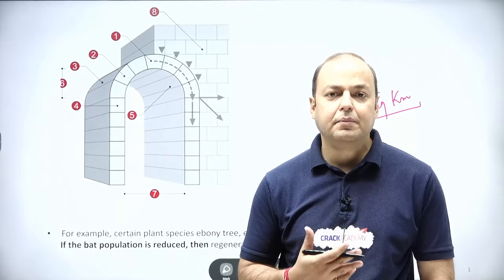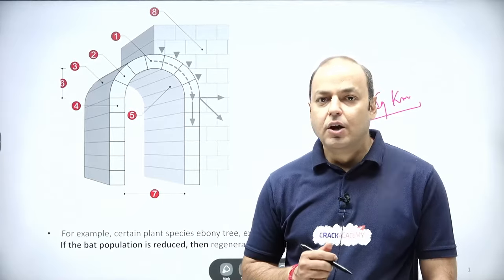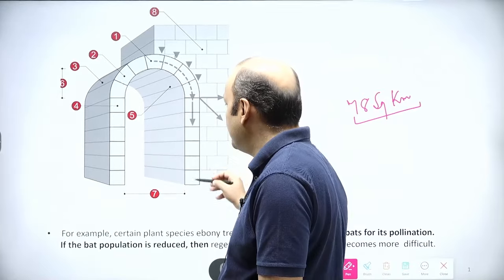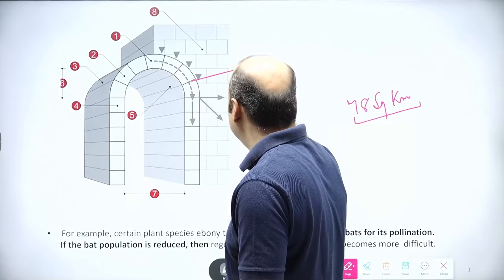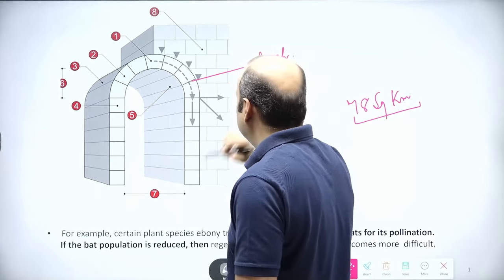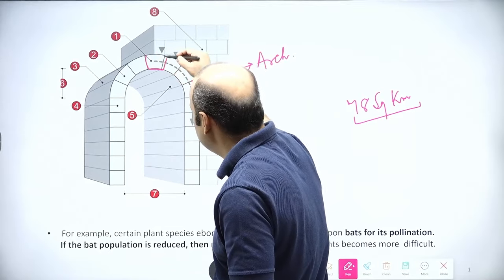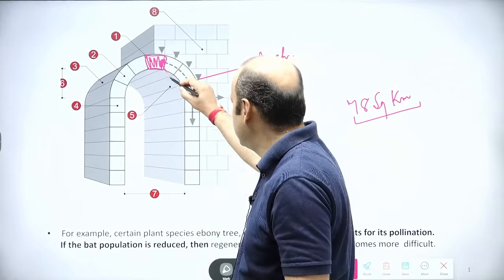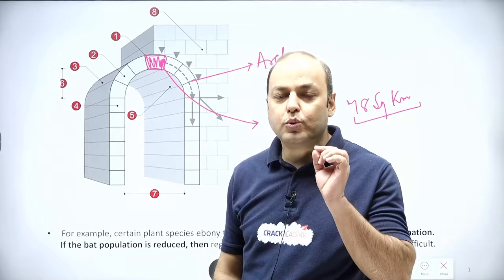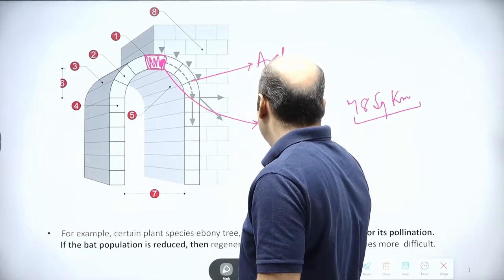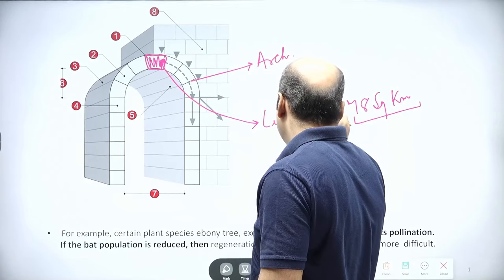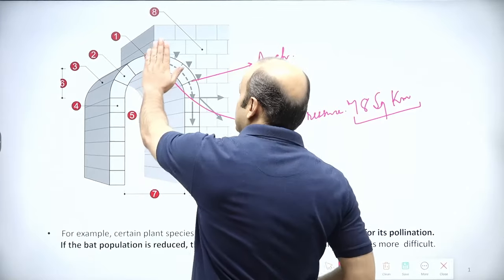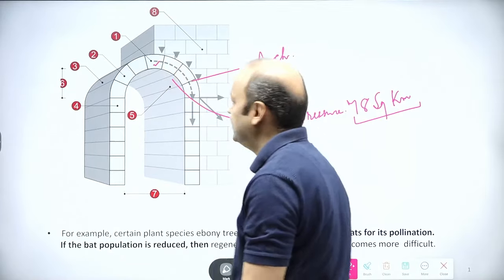We have given them a name known as keystone species. To fully understand this, you must have seen this architectural component which is known as arc. In this particular arc, if you talk about this particular stone, you will be surprised to know two things about this stone. First, this stone is under the least amount of pressure. So the least pressure is faced by this stone. To make it more clear, I am talking about this one, the number one, first point.